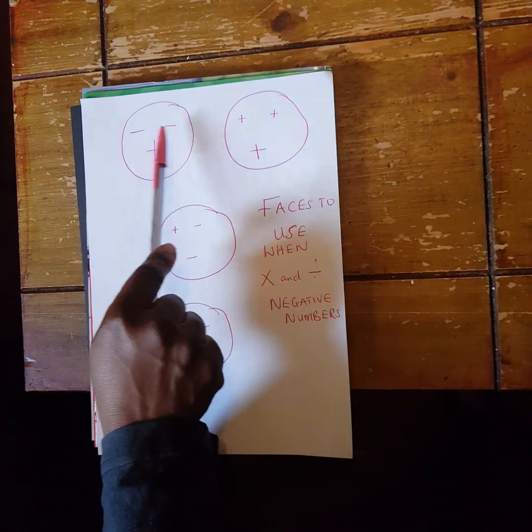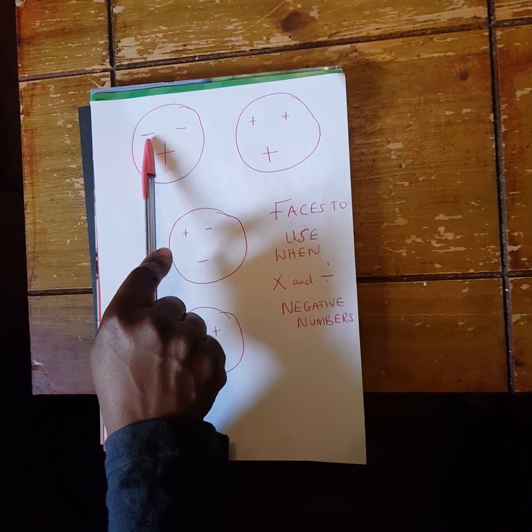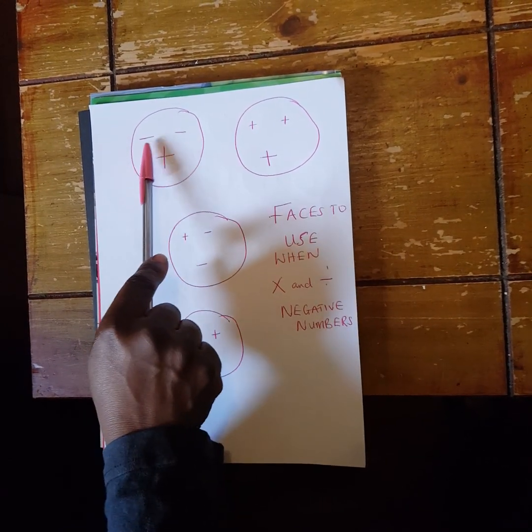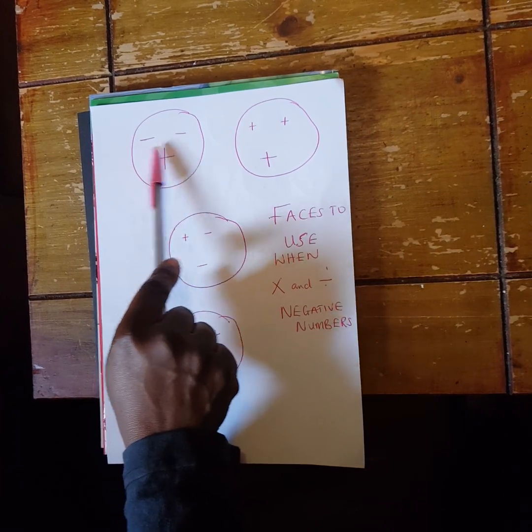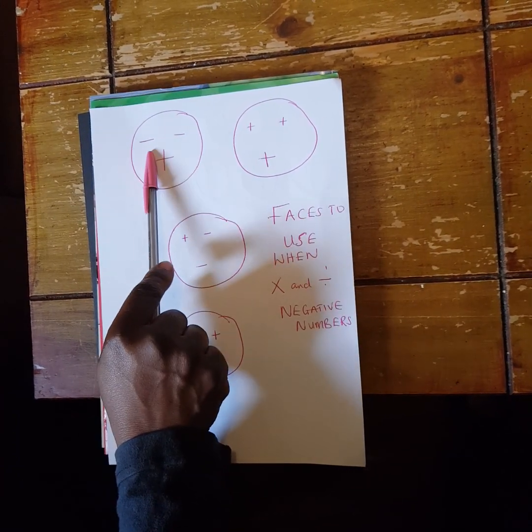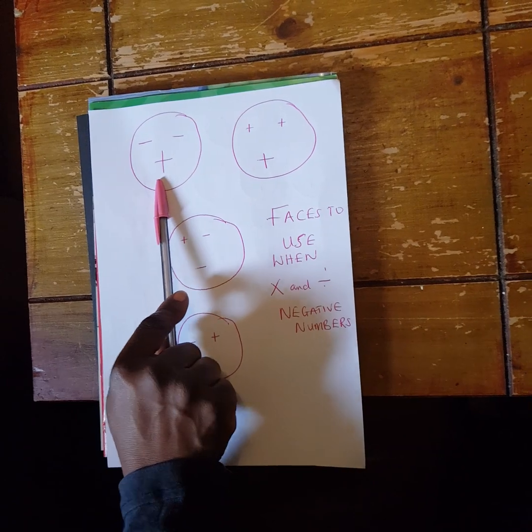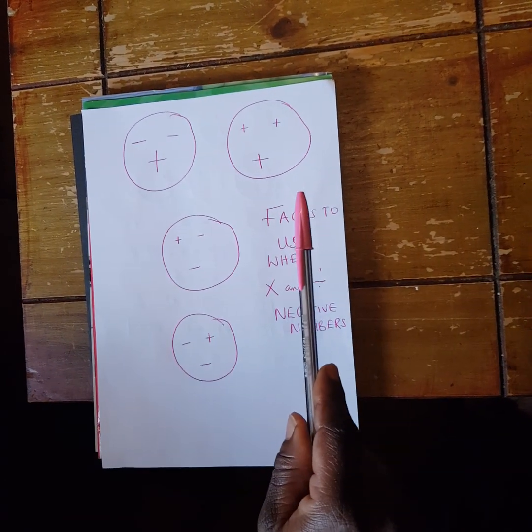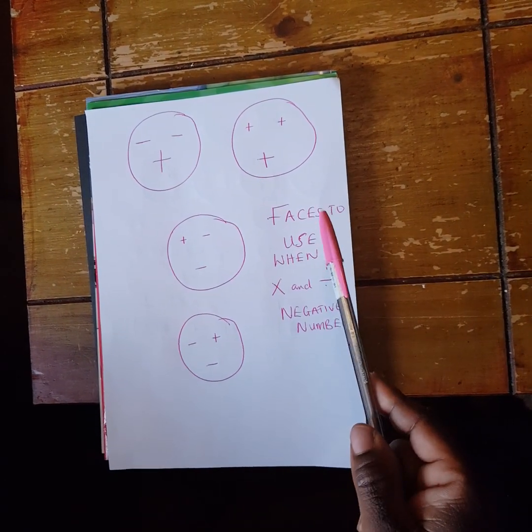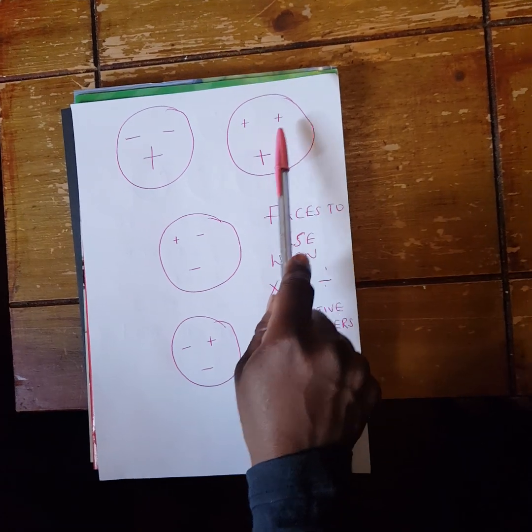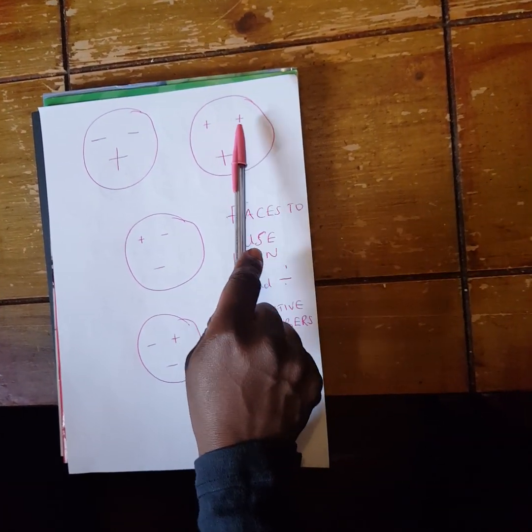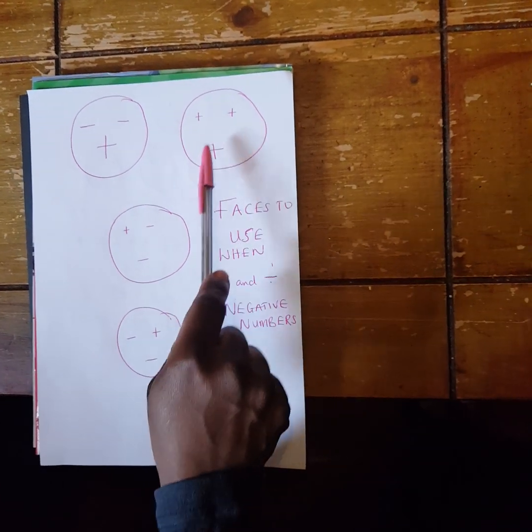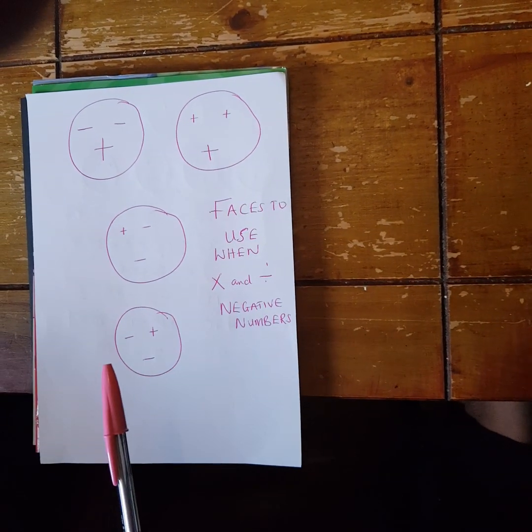This means when you are multiplying or dividing two same signed numbers like negative and negative, you have a positive. And if you are multiplying or dividing a positive number and a positive number, inasmuch as you are multiplying or dividing such numbers with same signs, you have a positive as your final answer.